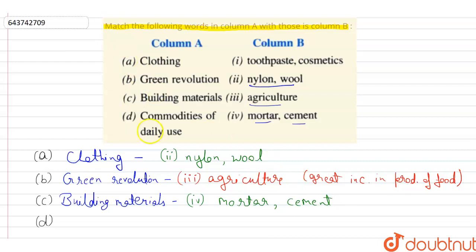The fourth one is commodities of daily use. It means what we are using in our daily day to day life. And among these options toothpaste and cosmetics, that is makeup. These are the two which we use everyday in our lives. So option will be first, that is toothpaste and cosmetics.